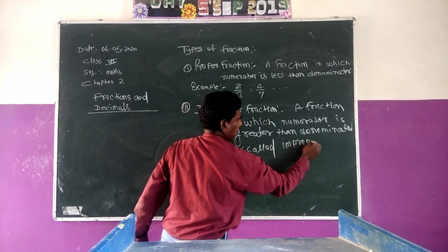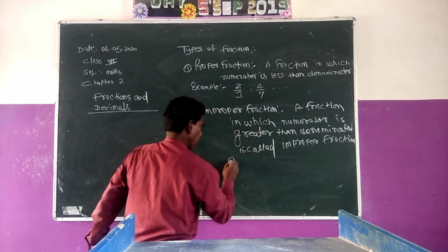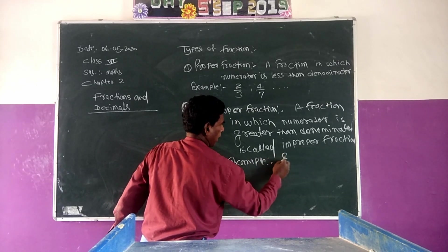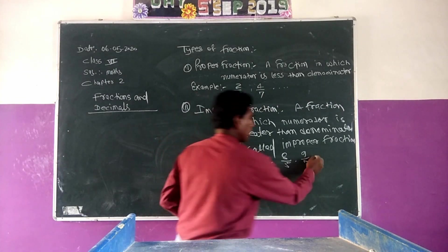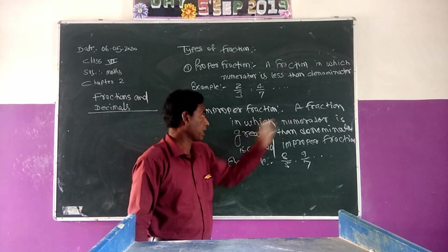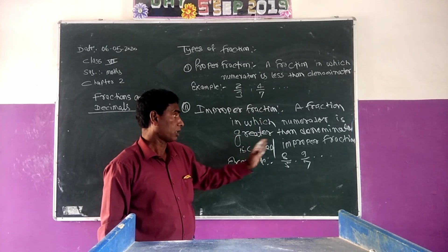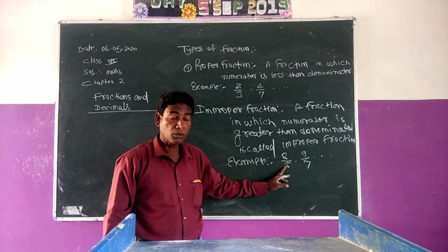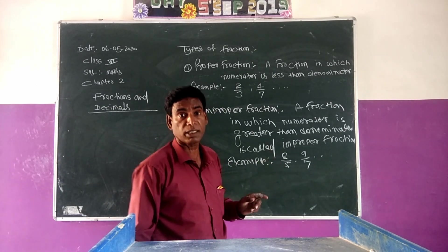Improper fraction. Example: 8 by 5, 9 by 7. Here we see that this is an improper fraction — a fraction in which the numerator is greater than the denominator. Example: 8 by 5. Here 8 is the numerator and 5 is the denominator, and 8 is greater than 5.